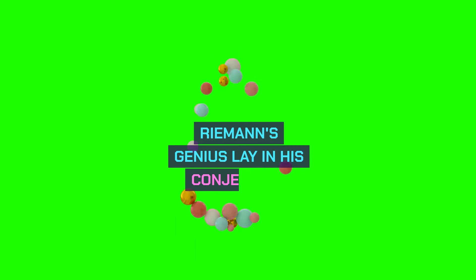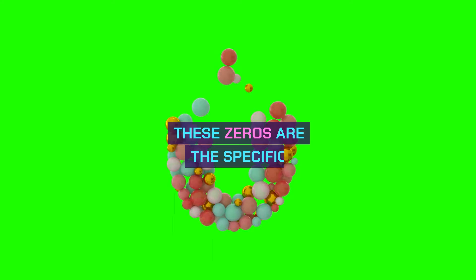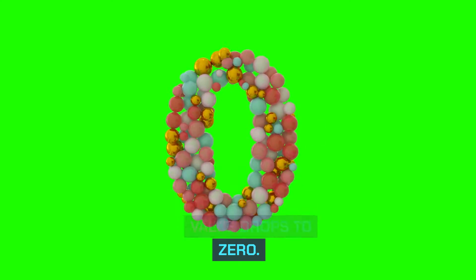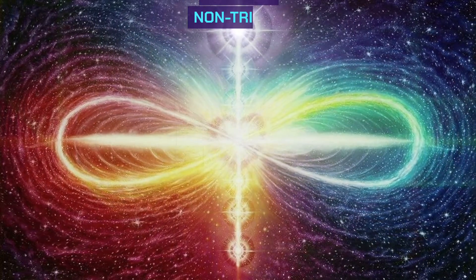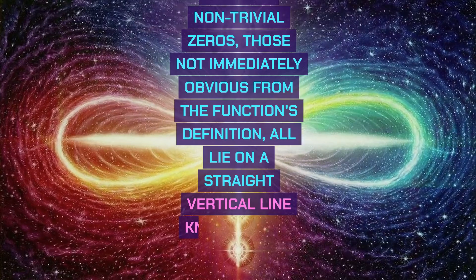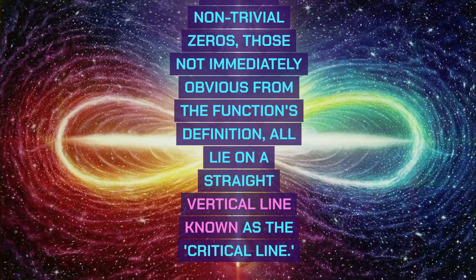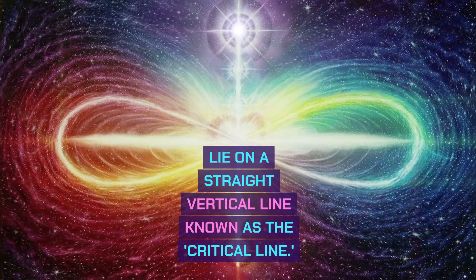Riemann's genius lay in his conjecture about the zeros of this function. These zeros are the specific points where the function's value drops to zero. Though the function stretches infinitely across the complex plane, Riemann postulated that the non-trivial zeros, those not immediately obvious from the function's definition, all lie on a straight vertical line known as the critical line.